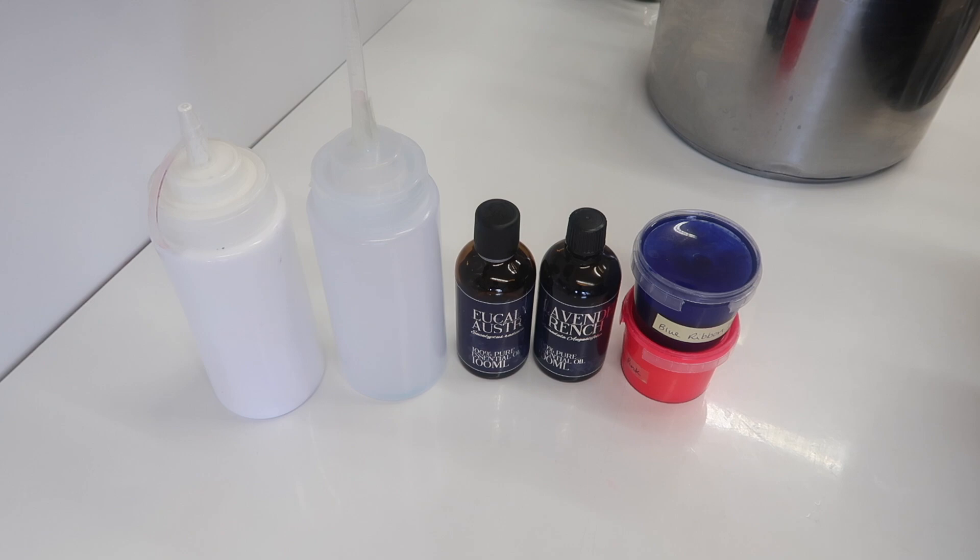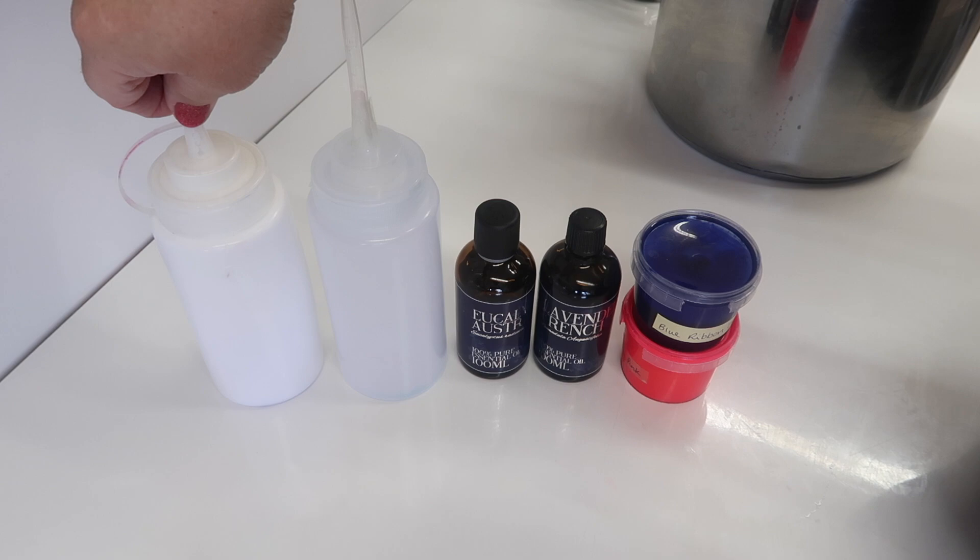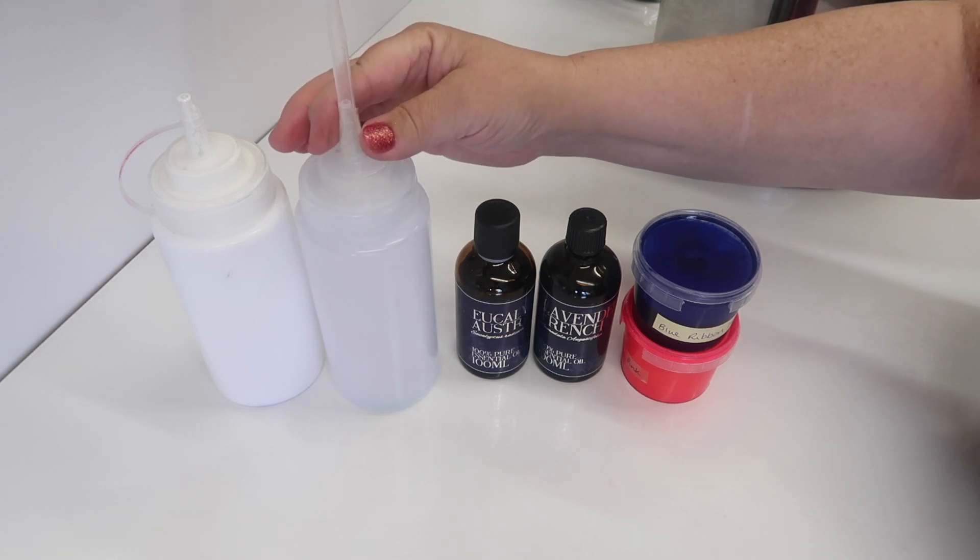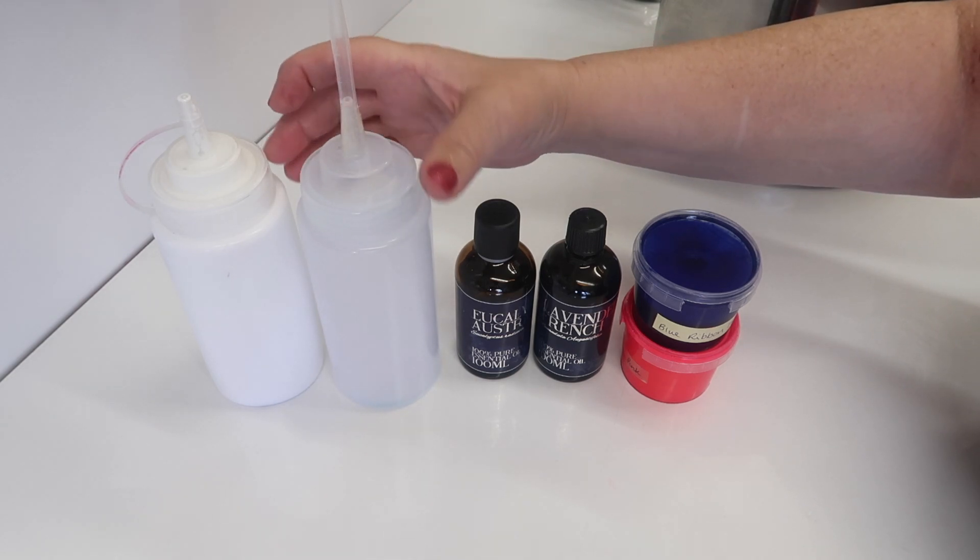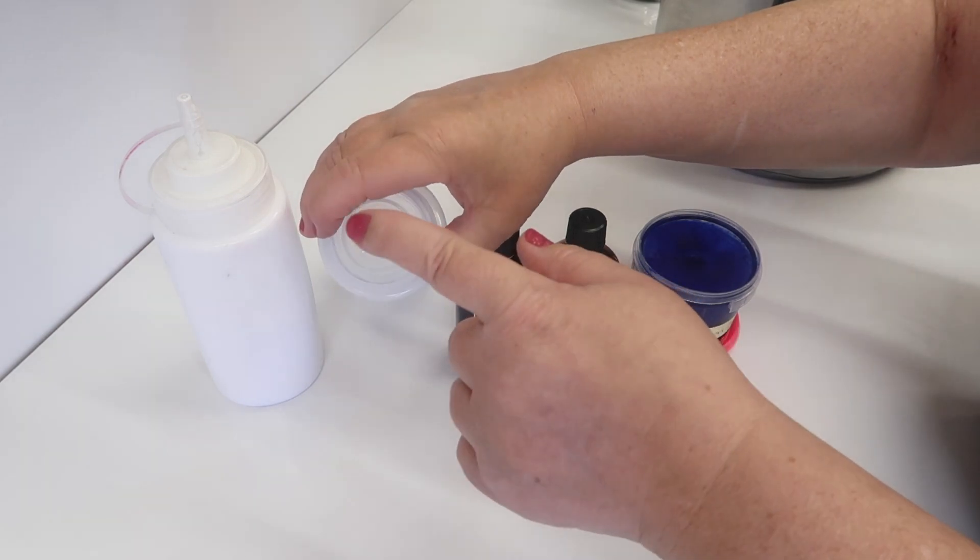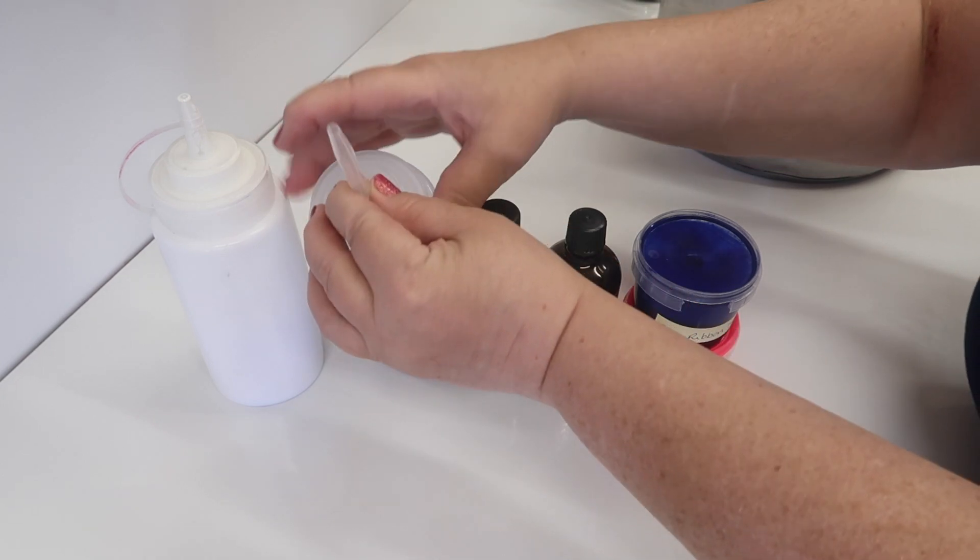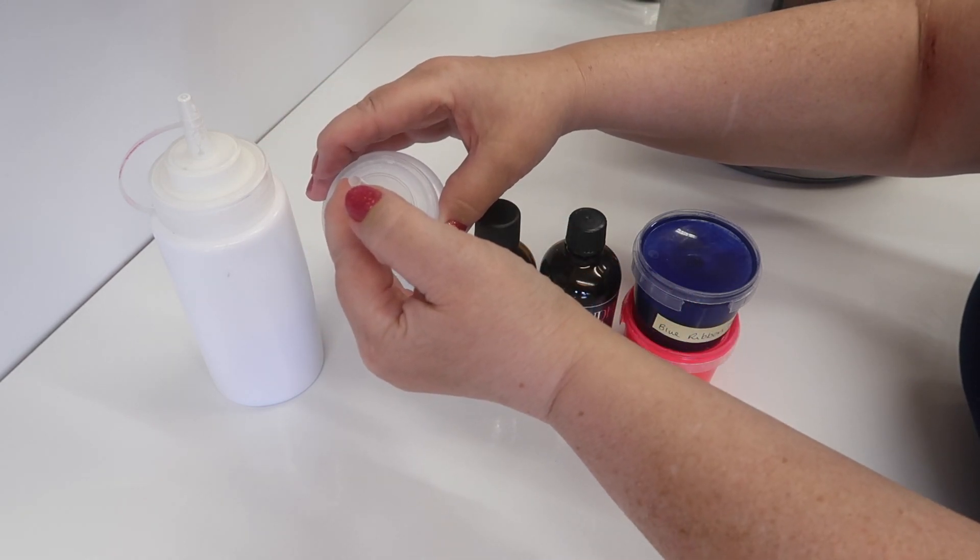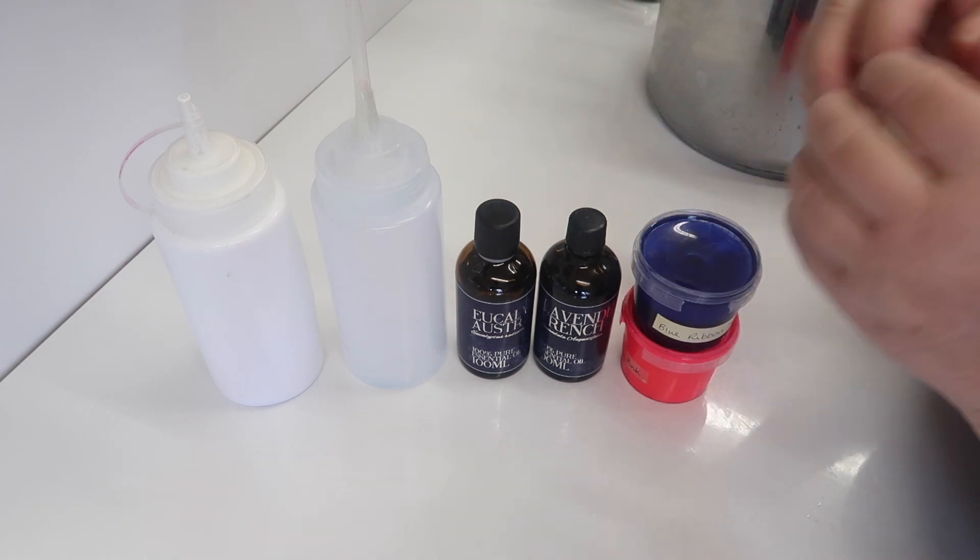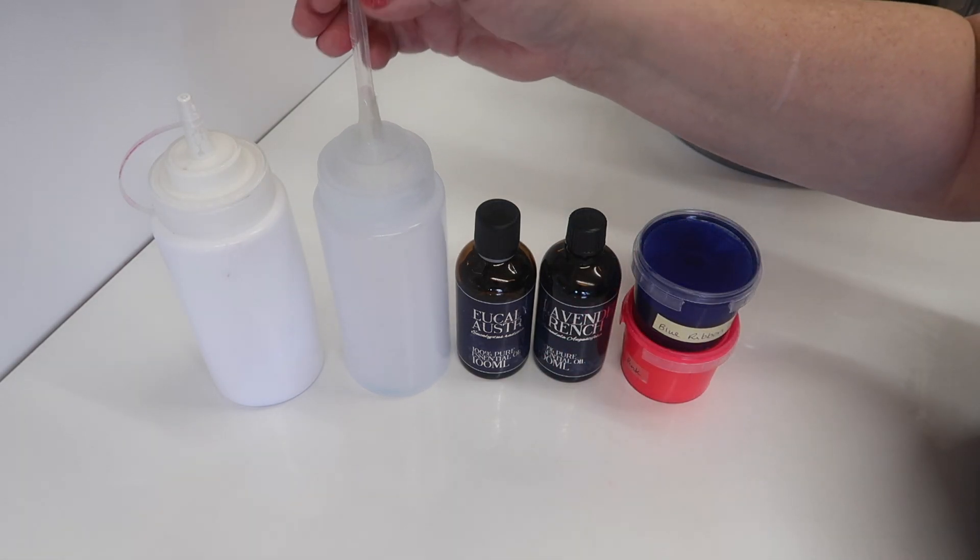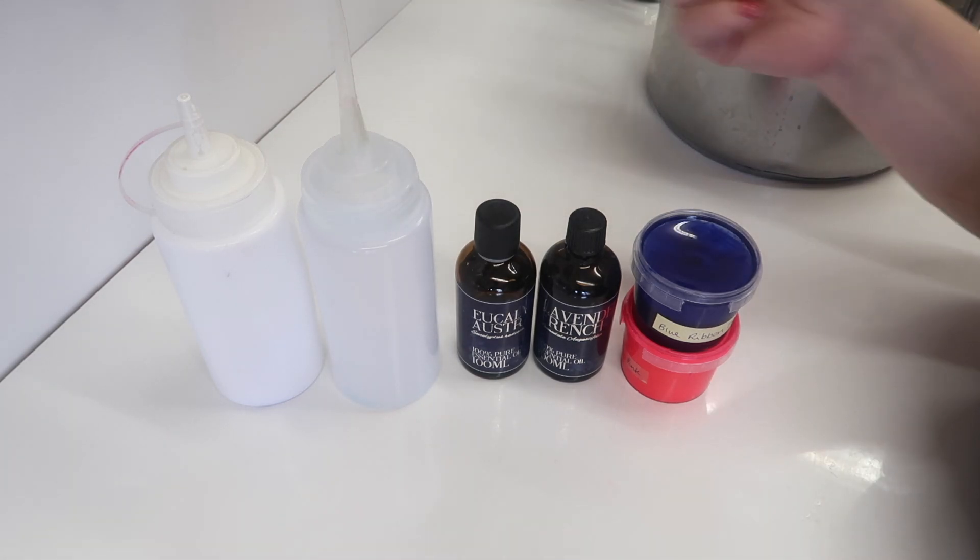We're going to be using some titanium dioxide today. You'll need a squeezy bottle - I've cut the end off a pipette and pushed the pipette down onto the squeezy bottle. I've cut a bit off the end of the pipette because I want the raindrops to be bigger. Cutting the end off gives you a bigger hole which will in turn give you a larger raindrop.